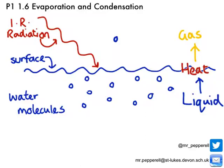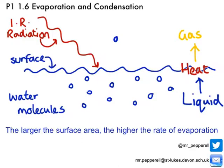That is how and why evaporation takes place. A number of things can affect the rate at which evaporation occurs. Since particles can only escape from the puddle surface, the larger the surface area of the puddle, the higher the rate of evaporation.